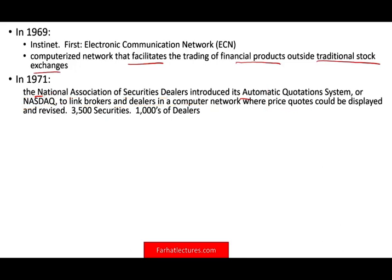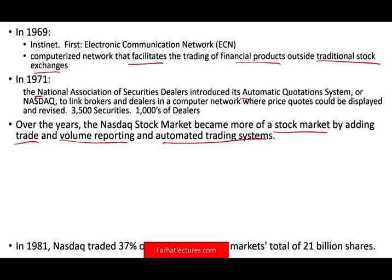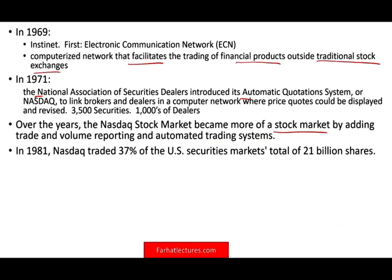If you wanted to buy or sell stocks, you would have to call the broker showing that price and negotiate with them. Over the years, NASDAQ became more of a stock market by adding trade volume reporting and automated trading systems, and would allow you to execute trades directly. By 1981, NASDAQ traded 37% of U.S. securities, a total of 21 billion shares. Ten years later it went up to 46%, and it's still growing.